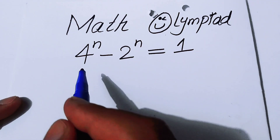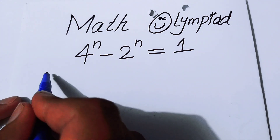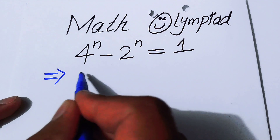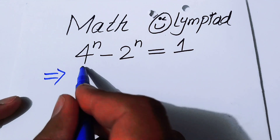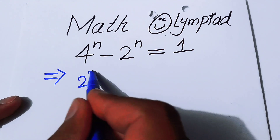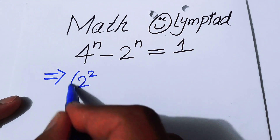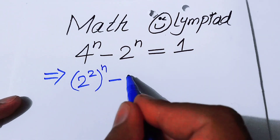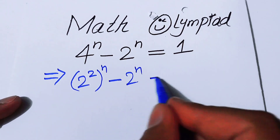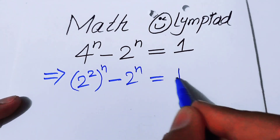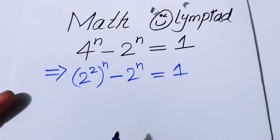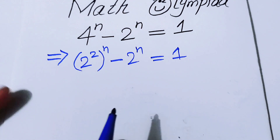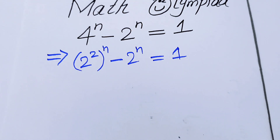The very first thing we are going to do is rewrite this equation. We write 4 as 2 to the power of 2, so we have (2²)^n minus 2^n equals 1. After that we will use the exponential law.